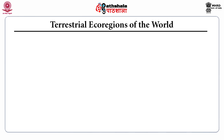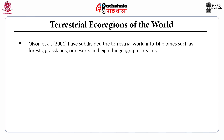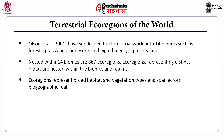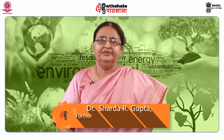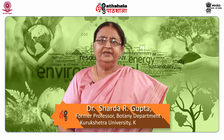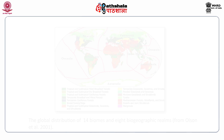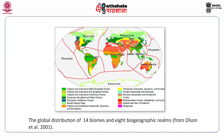Terrestrial ecoregions of the world, according to Olson et al. 2001, have subdivided the terrestrial world into 14 biomes such as forests, grasslands and deserts, and 8 biogeographical realms. Nested within the 14 biomes are 867 ecoregions. The ecoregions represent distinct biotas nested within the biomes and realms, and represent broad habitat and vegetation types spanning across biogeographic realms. The scheme of organization consists of biogeographical realms with 8 categories and biomes with 14 types.